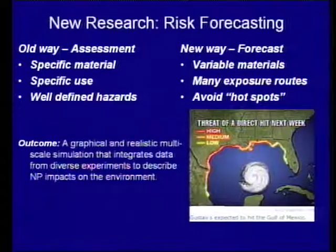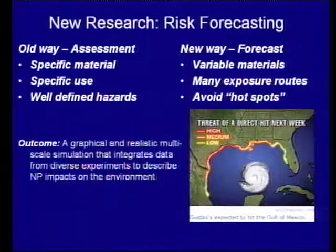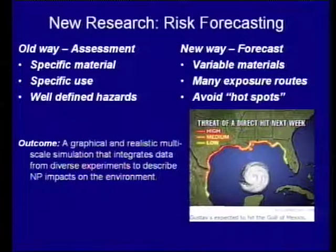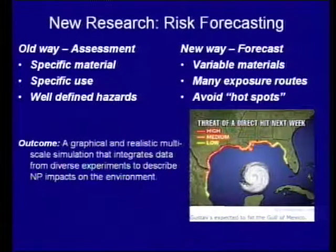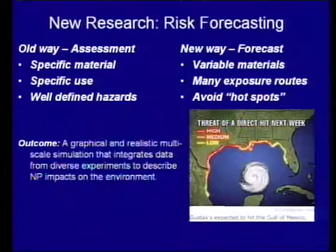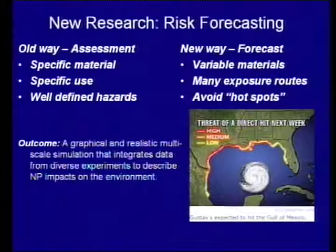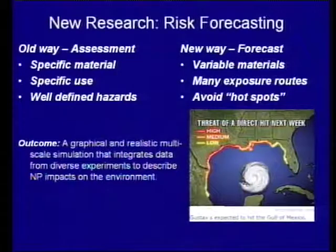We're working on actual computational tools at Rice that would help us map this out. A lot of folks say you could never build computational models that would help you characterize whether a material is going to kill a rat or have an effect on an ecosystem. But I would say the tools we have now make that very possible. The weather models that go into predicting if a hurricane is going to hit a city are not perfect, and yet they still influence policy, and the public accepts and uses them.